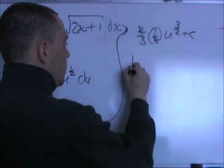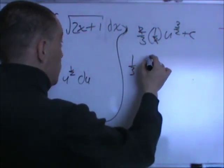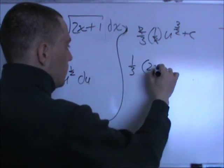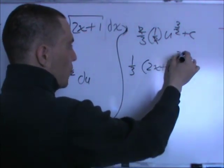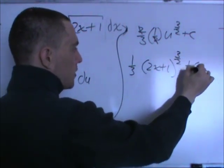Okay, now it's just a matter of replacing what we originally substituted. So, in this case, it's going to be 1 third, replace the u with the 2x plus 1, to the 3 halves power, plus c.